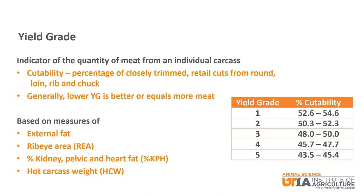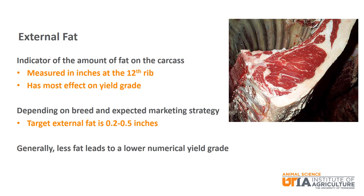Yield grade is based on measures of external fat, rib eye area, percent kidney, pelvic, and heart fat, and hot carcass weight. External fat is an indicator of the amount of fat on the carcass and has the most effect on the yield grade. It is measured in inches at the 12th rib.